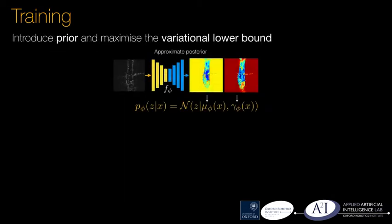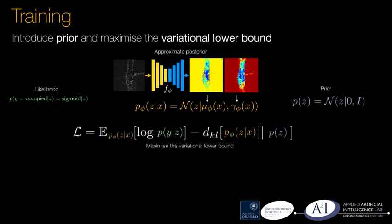In order to encode an assumption that regions of space that are unknown in LiDAR are likely to be unknown in radar, we introduce a prior on the uncertainty associated with unobserved space and train our model by maximising the variational lower bound.